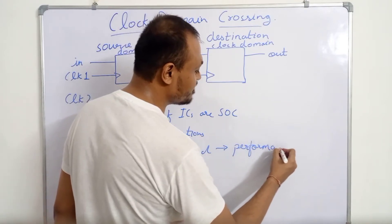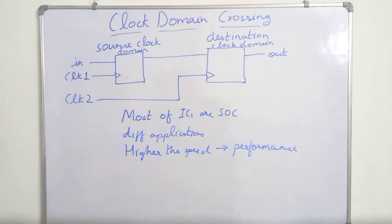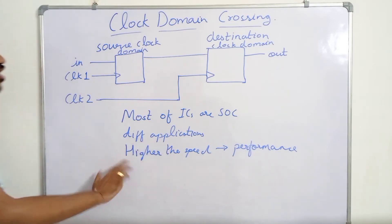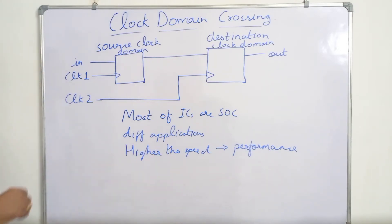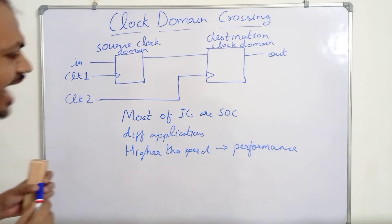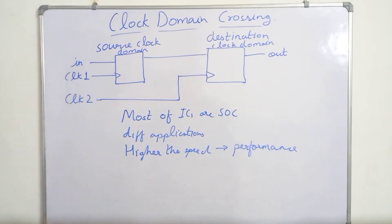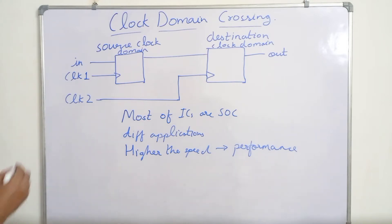But higher speed also means more power consumption. So the applications which do not need high performance are operated at lower speeds, and the applications which require high performance are operated at high frequencies. This means all the different applications are operated at different speeds, so they will require different clocks.